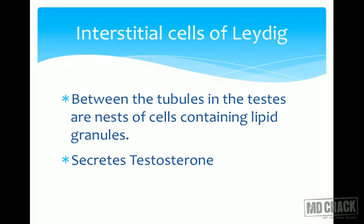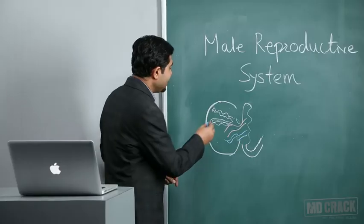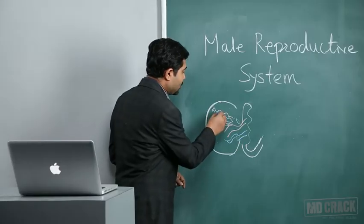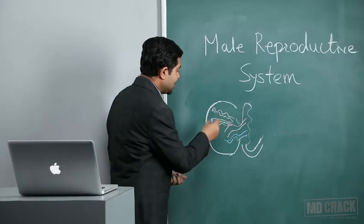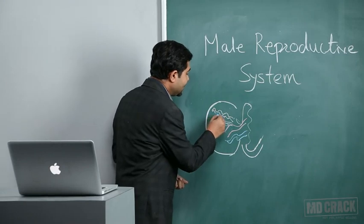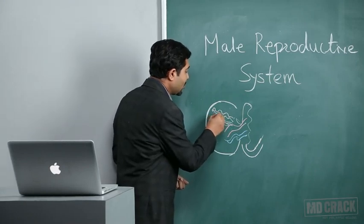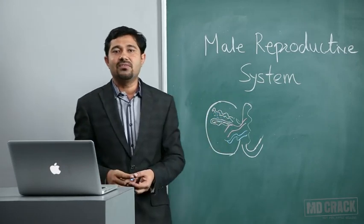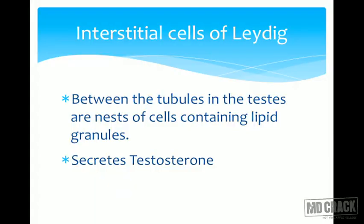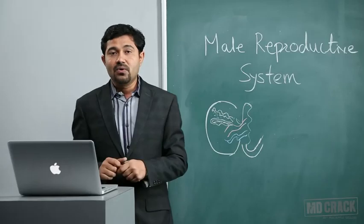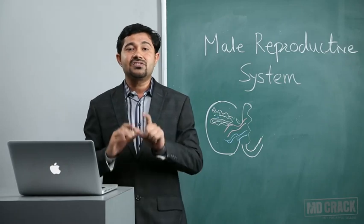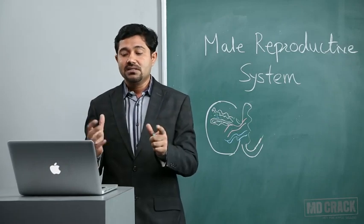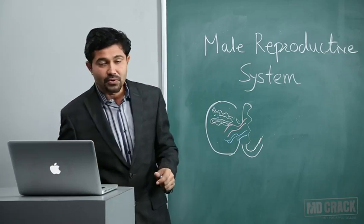Between the seminiferous tubules are lipid-containing cells called the interstitial cells of Leydig. The interstitial cells of Leydig produce testosterone. We will now go into the detailed structure of the seminiferous tubule.